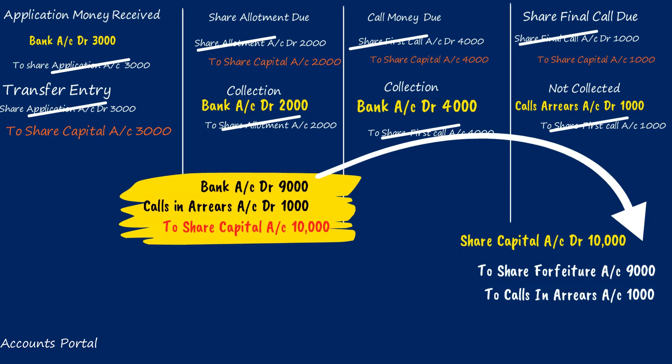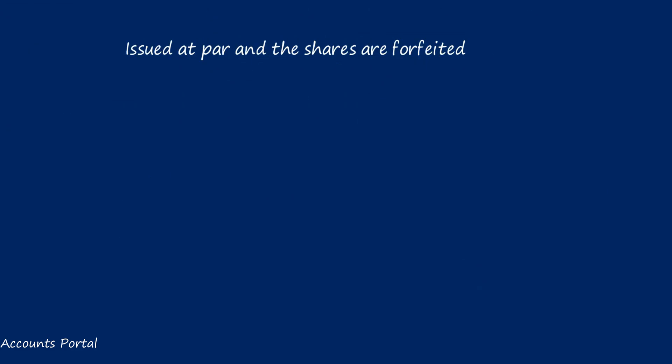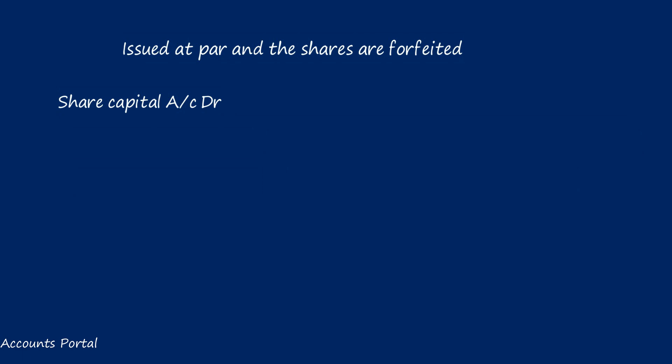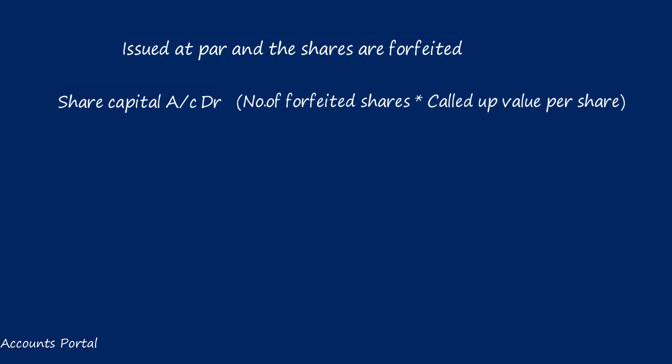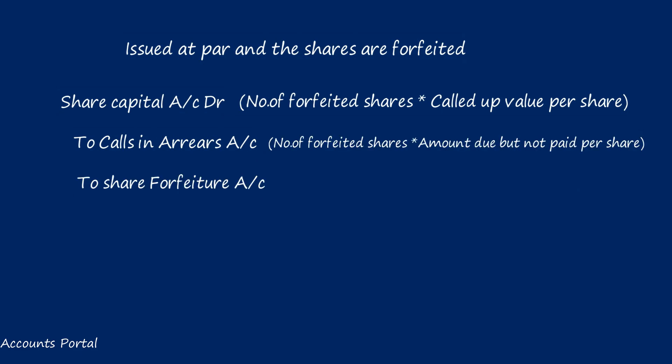Here is the exam summary: When shares are issued at par and forfeited, the journal entry is — Share Capital account Dr. with (number of forfeited shares × called-up value per share); To Calls in Arrears account credited with (number of forfeited shares × amount due but not paid per share); To Share Forfeiture account credited with the amount already received on the forfeited shares.